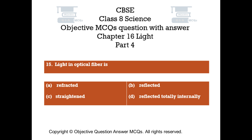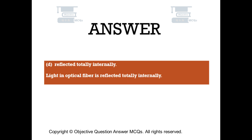Question number 15. Light in optical fiber is: Option A refracted. Option B reflected. Option C straightened. Option D reflected totally internally. The right answer is option D: reflected totally internally. Light in optical fiber is reflected totally internally.